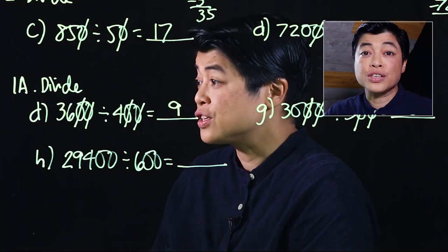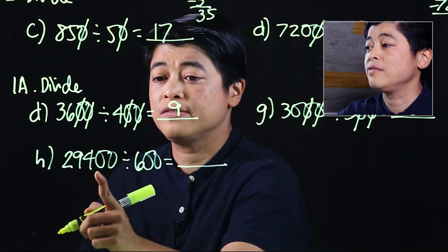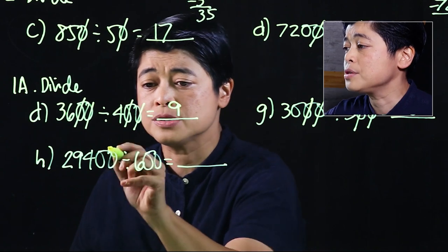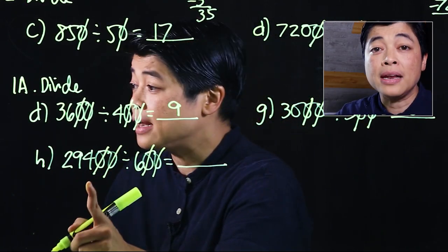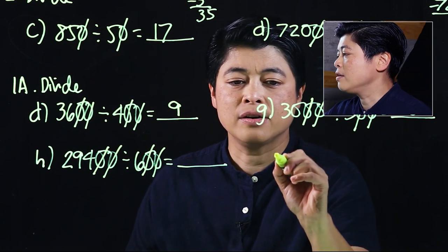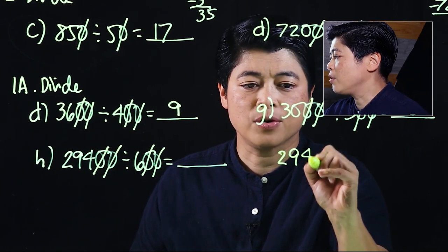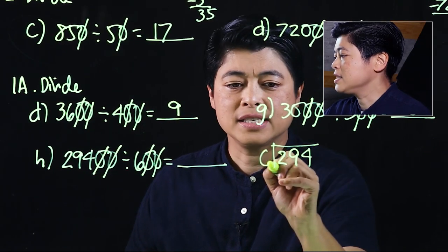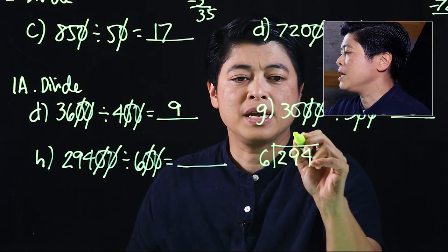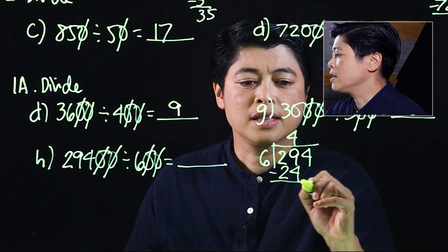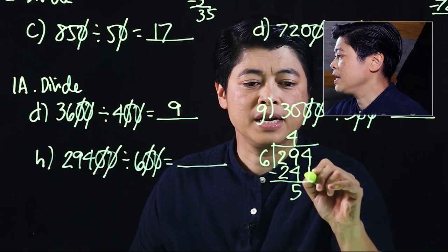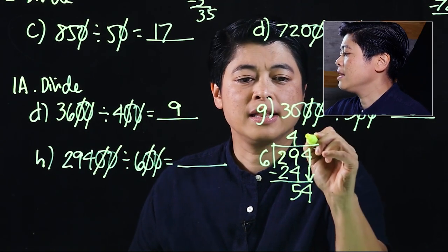Our final question for the lesson: these have two zeros and two zeros, which will cancel. I can't do that mentally, so I'll write it down as 294 divided by 6. So that would be 4, that will be 24, subtract, that will be 5, bring down 4.